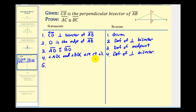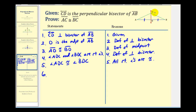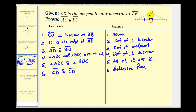It follows that these two angles are congruent because all right angles are congruent. So far, we have segment AD congruent to segment BD, and these two right angles which we know are congruent. Now, because these two triangles share side CD, we state that segment CD is congruent to itself by the reflexive property. We now have enough information to prove the triangles congruent: triangle ACD is congruent to triangle BCD by side-angle-side congruence.